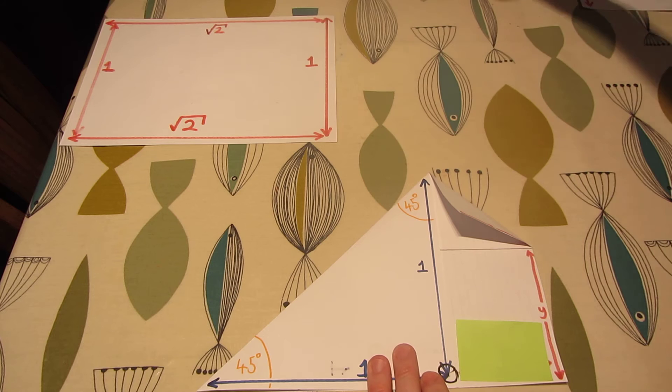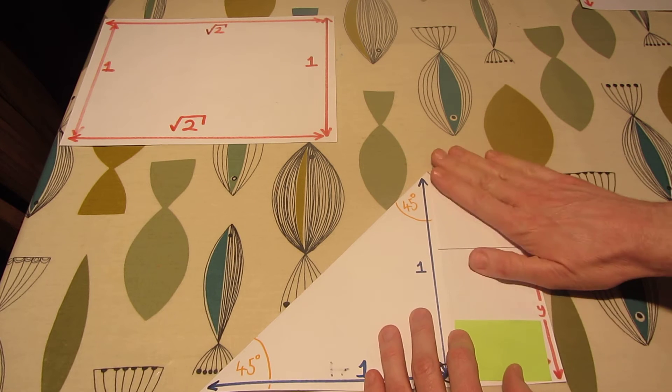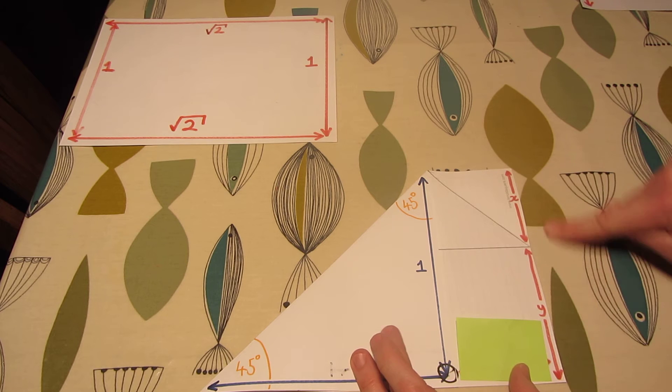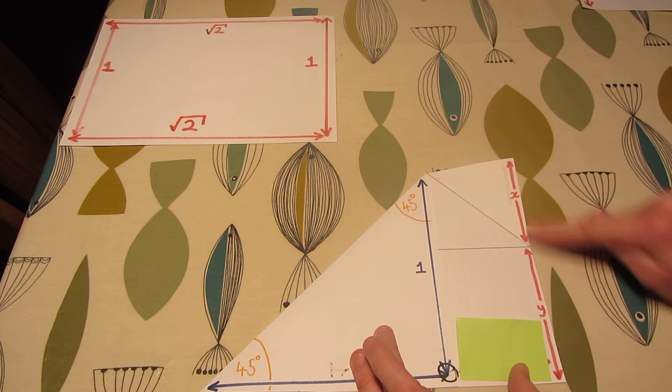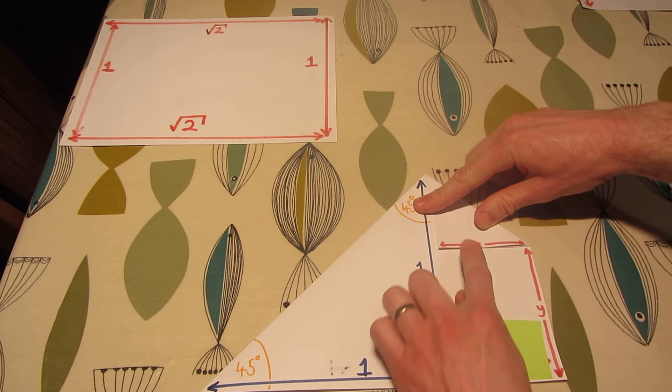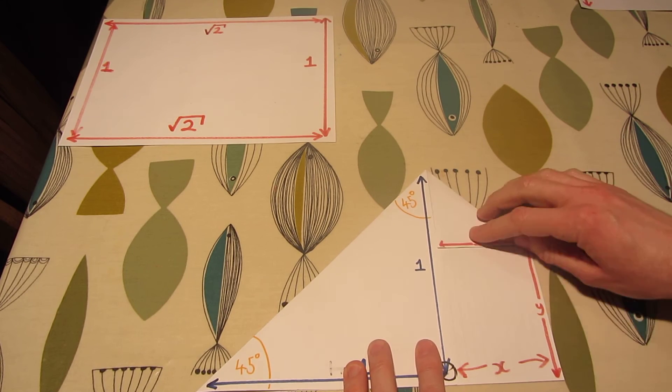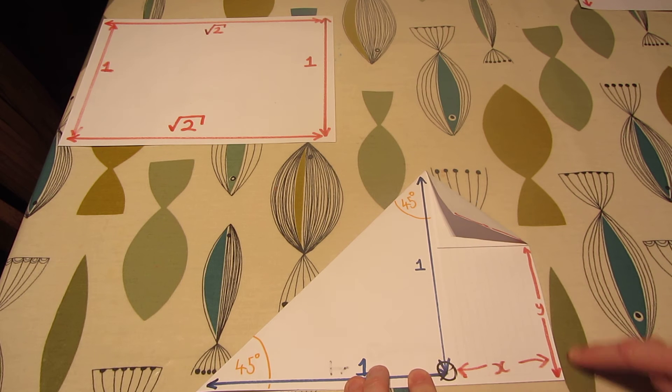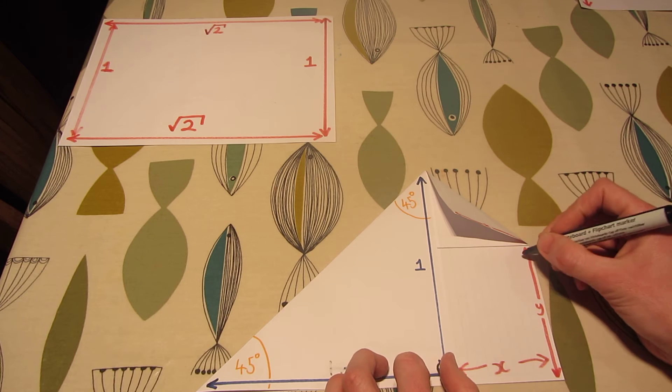What about the next bit? Well, we know that this side, the length is one. x plus y, x plus y, however long these are, they equal one. Fold that over. x plus y is one. So along there, along there. Frankly, we know that that's x as well. So from there to here, from here to here is also one.